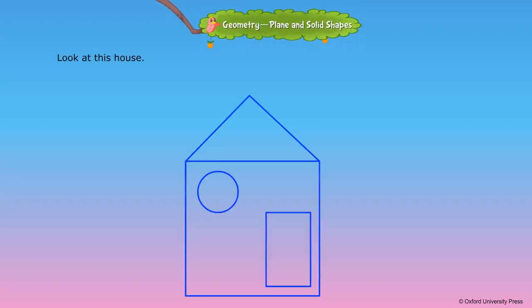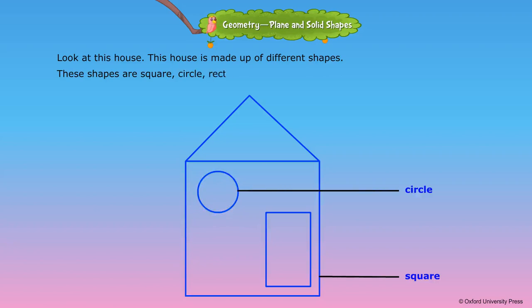Look at this house. This house is made up of different shapes. These shapes are square, circle, rectangle, and triangle.